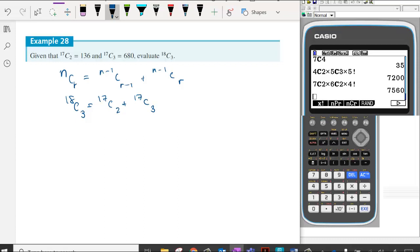Now we know that 17C2 is 136, we know that 17C3 is 680. So it's just the sum of these two. So that will end up being 716 plus 100 is 816. So nice and simple applying this understanding.